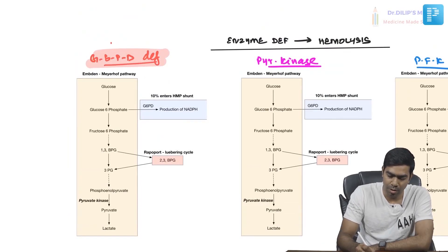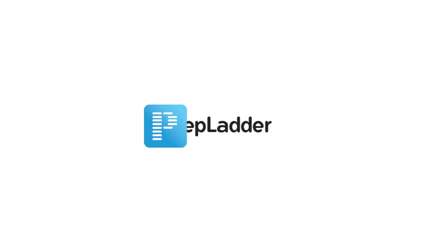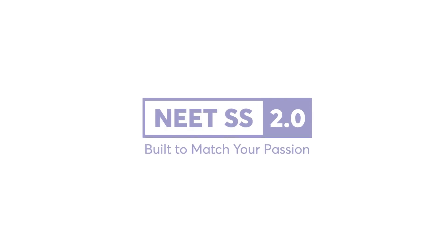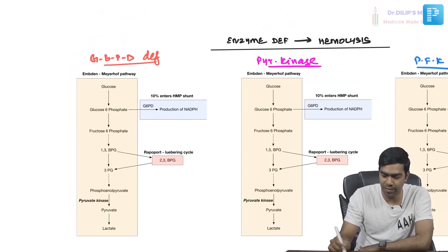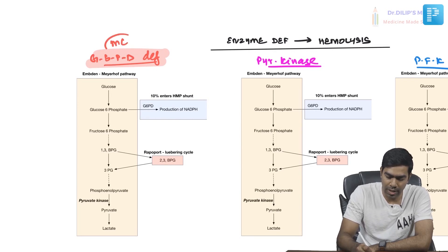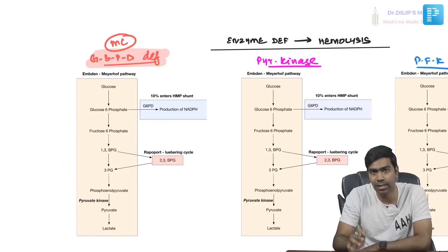G6PD deficiency is the most common enzyme deficiency in the world — not just the most common enzyme deficiency causing hemolysis, but the most common enzyme deficiency overall. The majority of patients will be asymptomatic because they don't have a severe decline in the enzyme.